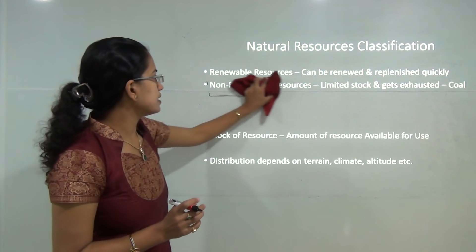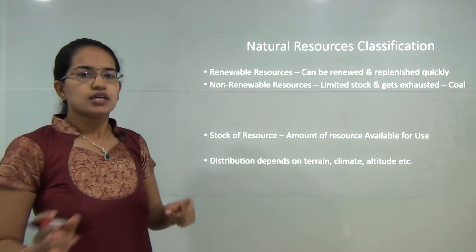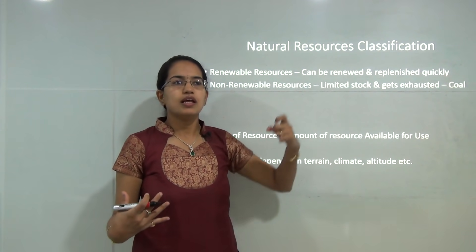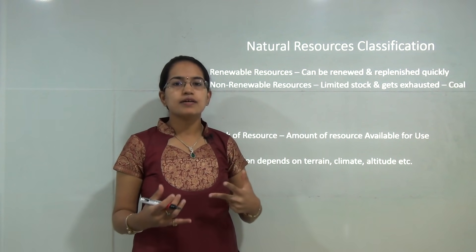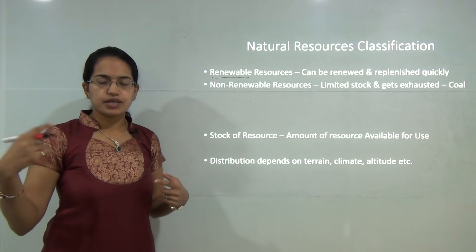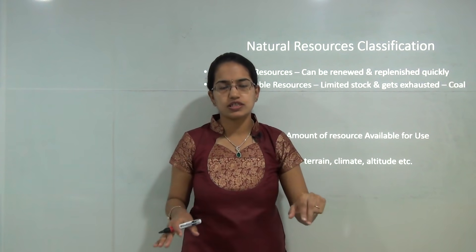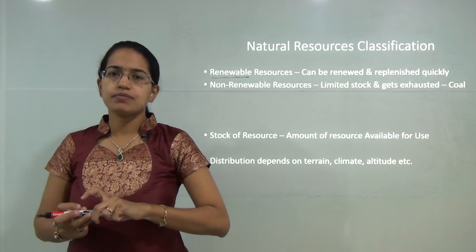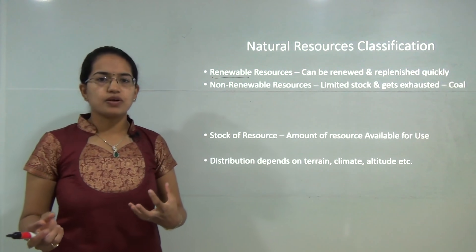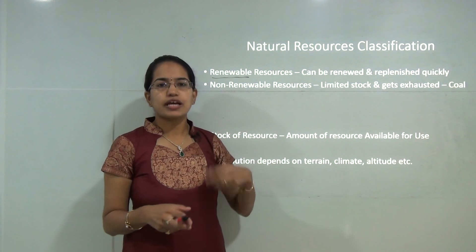Finally, there is another important classification based on use: renewable resources or non-renewable resources. Renewable resources are those which can be renewed and reused one after another — for example sunlight, water, wind, and waves. These can be used and replenished. However, non-renewable resources have limited stocks and get exhausted. A common example of non-renewable resources would be coal, oil reserves, and iron ore deposits. Once exhausted, you cannot bring them back.